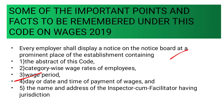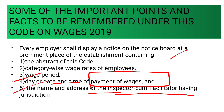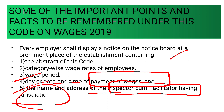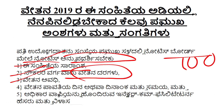The fourth point is the day or date and time of payment of wages. If you are providing wages daily, then at what time? If you are providing payment monthly, then on which date — whether 4th, 5th, or 6th of that month — this should also be displayed on the notice board. And the name and address of the inspector cum facilitator having jurisdiction should also be displayed, because if there is any issue, the employee can contact such persons. These provisions are provided in the Code on Wages 2019.